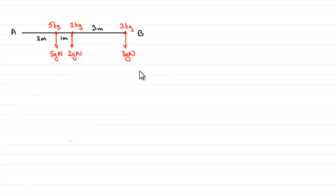To do that I've got an example here of a light rod AB with three particles attached to it of masses 5 kilograms, 2 kilograms and 3 kilograms. You can see the distances between them. The distance from the 5 kilogram mass to A is 2 meters and then between these two particles 1 meter and between these two particles 3 meters.